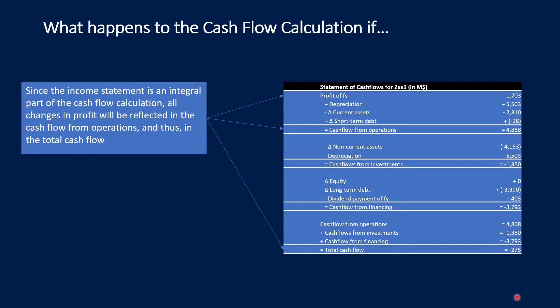What happens to the cash flow calculation if you re-decide about your financing? It's easy to say: the profit and loss — or income statement — is an integral part of the cash flow calculations, so all changes in profit will also be reflected in the cash flow from operations, and since this is part of the total cash flow, also in the total cash flow. All other figures are not affected.